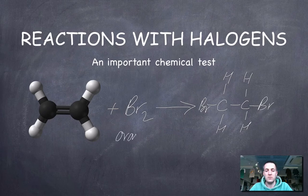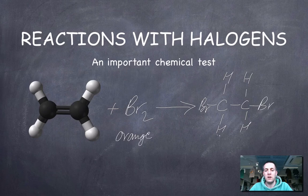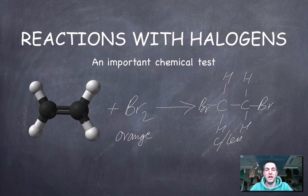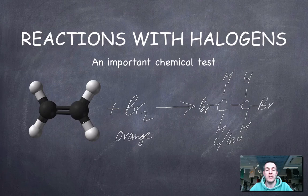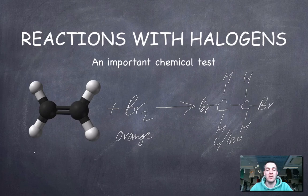So our bromine has attached to it. This is orange bromine. But this is colorless. And so this is a really important chemical test because if you've got an alkene and you add bromine water to it, then the bromine water will lose its color with an alkene. It won't do that with an alkane because, remember, they're quite unreactive and they need UV light to make this happen.